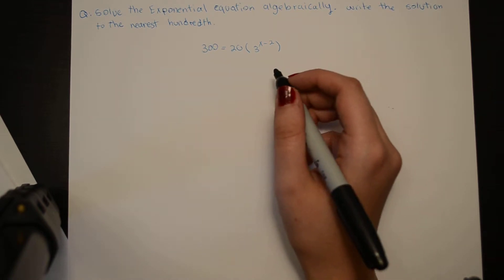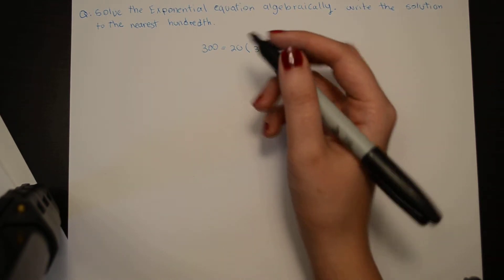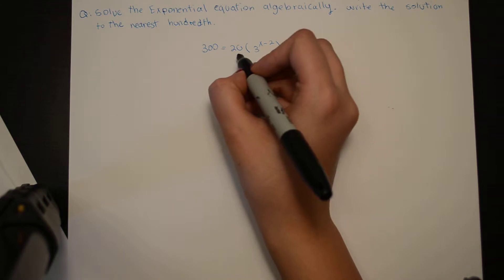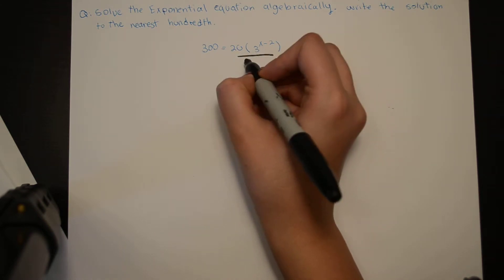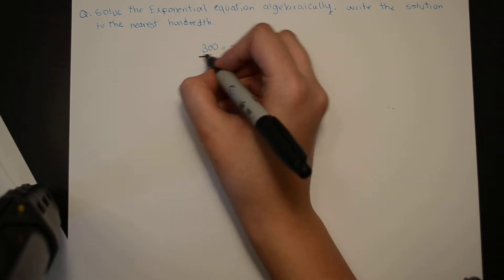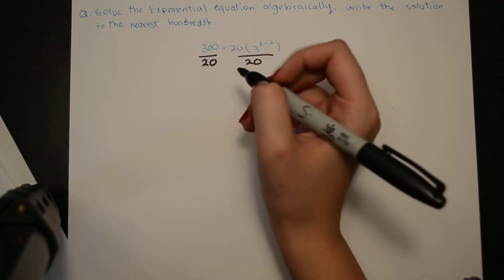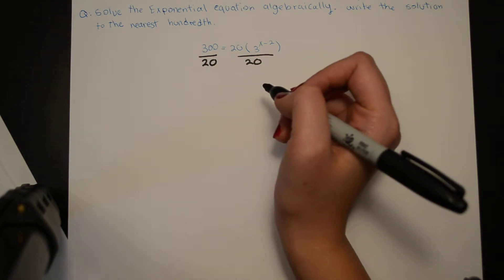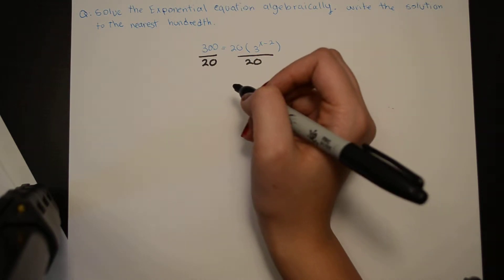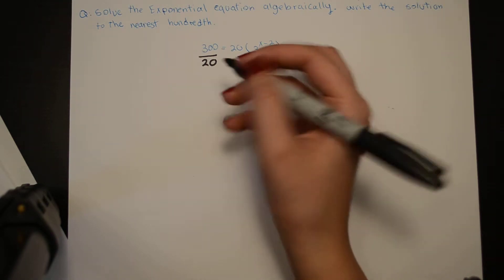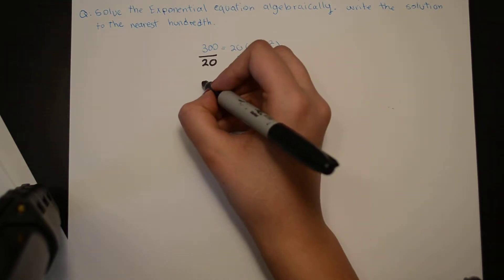The first thing we have to do is divide both sides by 20. If we put this in a calculator and divide 300 by 20, we get 15.